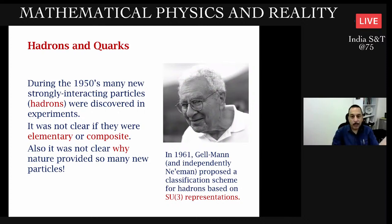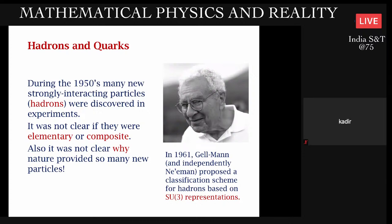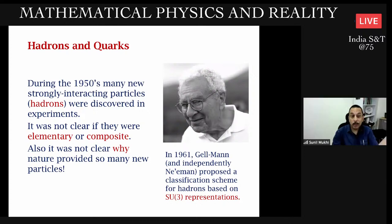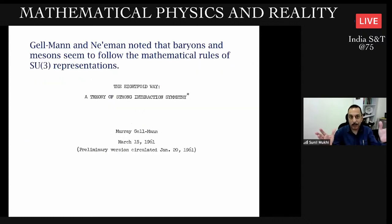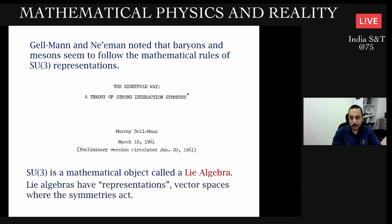Gell-Mann and Ne'eman both knew something about mathematics called SU(3), which was very exotic to physicists at the time. It's a group of certain types of three-by-three unitary matrices. They noted - here is Gell-Mann's note, an internal note, not a real paper - that these baryons, that the hadrons which were further subclassified into baryons and mesons depending on whether they had half-integer or integer spin, seem to follow rules associated to the mathematics of SU(3).